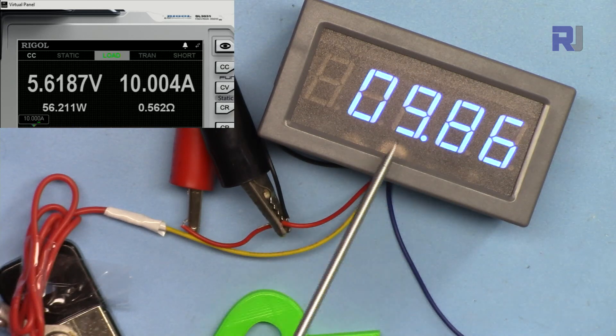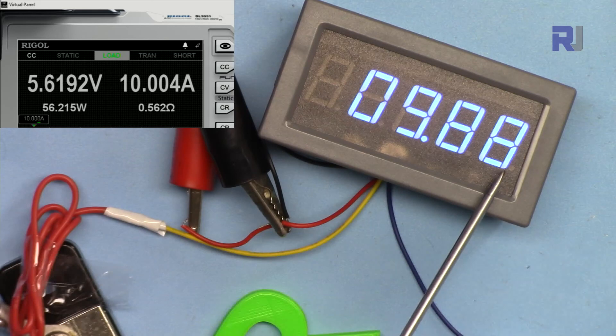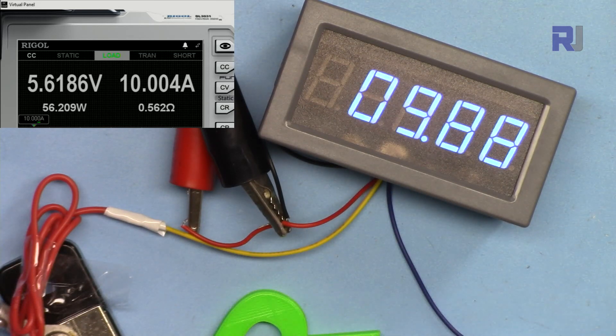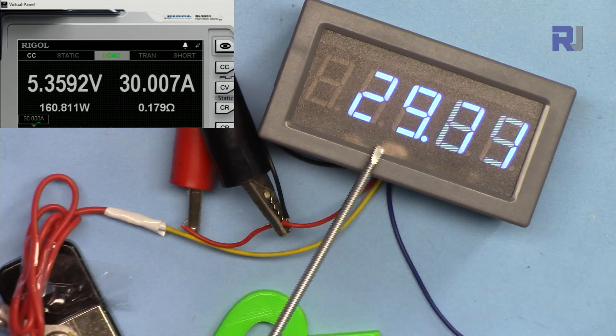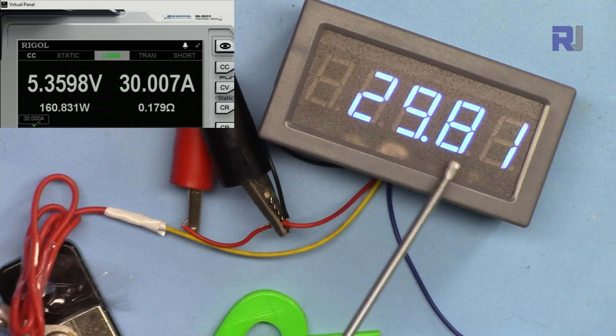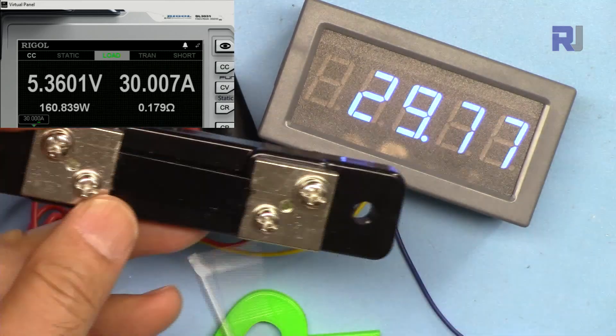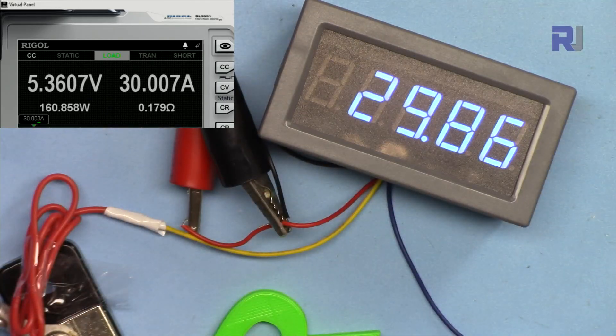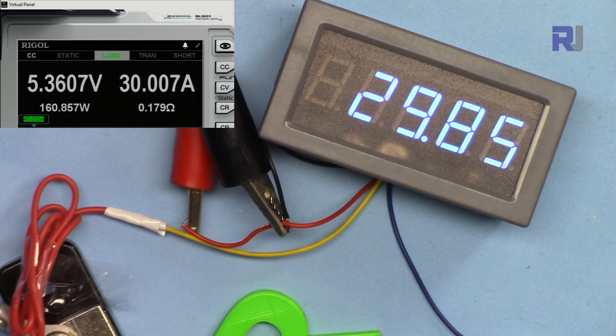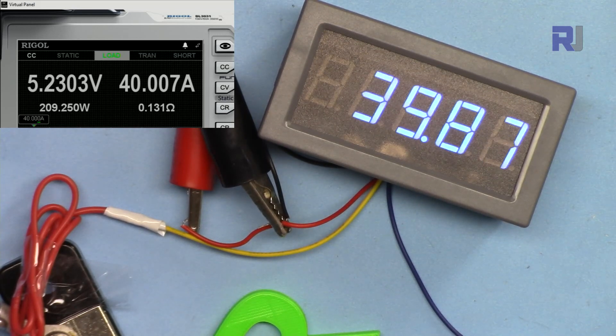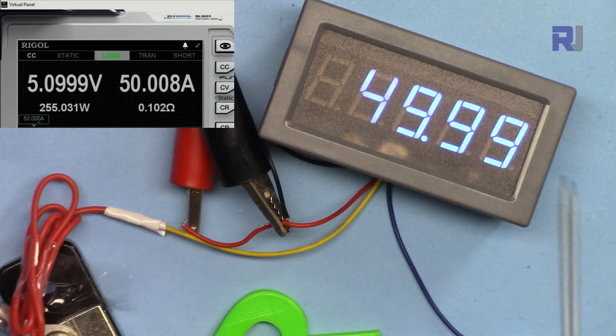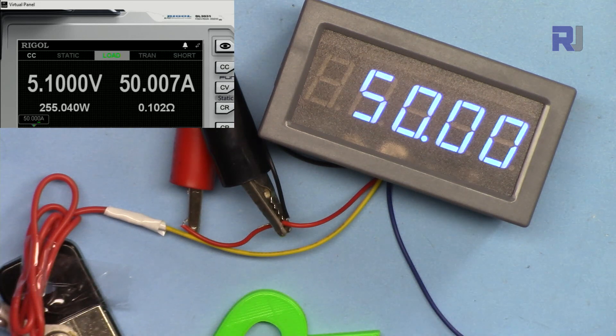So now this is the actual current 10 ampere and we are reading 9.84, 9.86. This is around 120 milliampere deviation or more. Let's go with 20. We are reading 19.87. Let's go with 30. Now it's 30, around 120 milliampere deviation because this shunt resistor is 10 percent, it has 10 percent error so keep that in mind. So now it's 40. Now this is 50 and this is very accurate at 50.